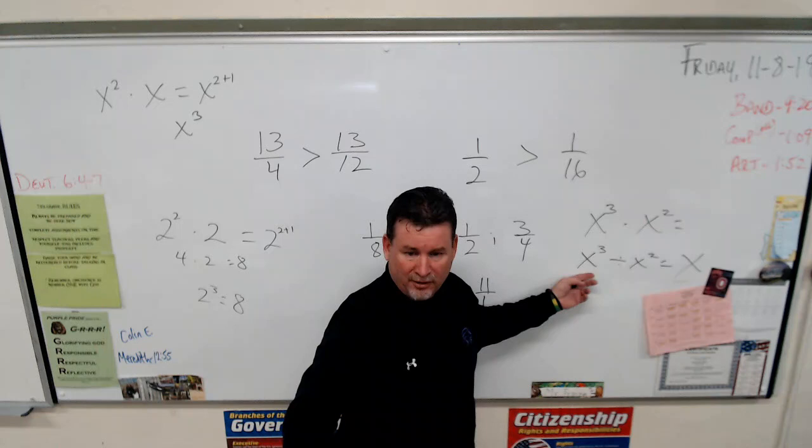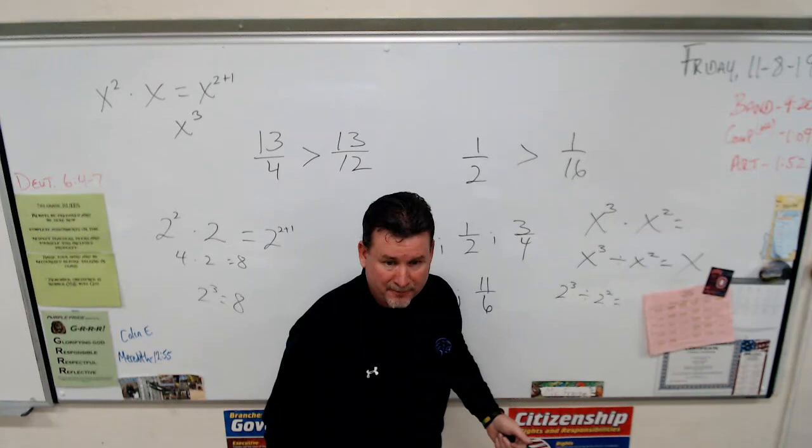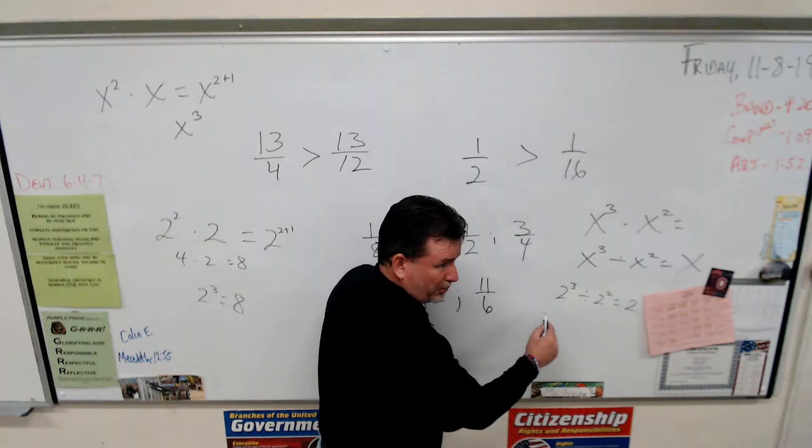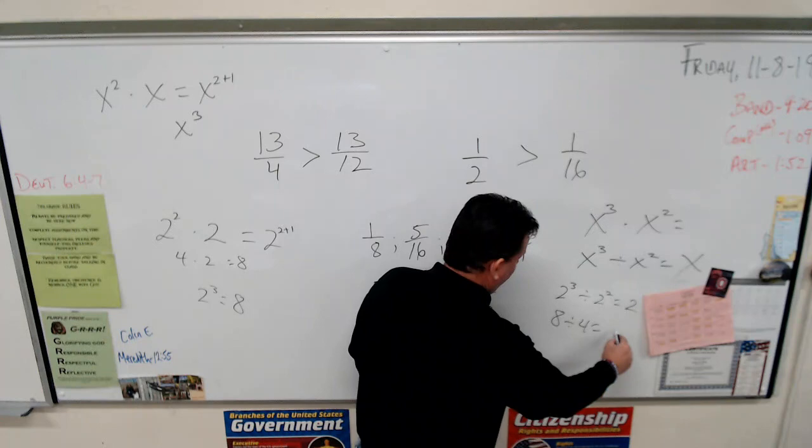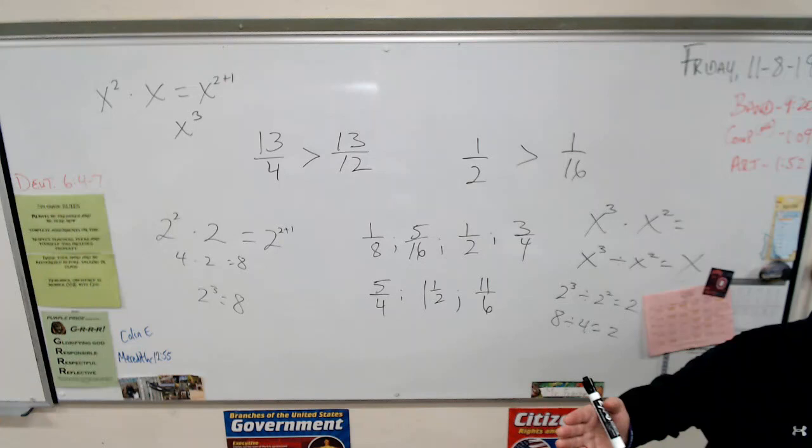All right, so let's prove this now. Let's go back to numbers. What if this was 2^3 divided by 2^2? According to this, we would say the answer is going to be two. Let's see if that works. What's 2^3? Eight. What's 2^2? Four. What's eight divided by four? Two. See how that works? Everybody good? Here's your work. Look at that. Look how fast we did that. Kira.